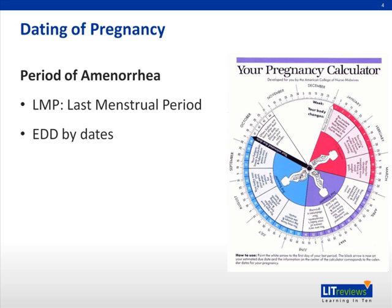If you align the last period arrow with the date that she gives you, the expected date of delivery arrow would point to her expected date of delivery. Nowadays it's even easier — we have computer software that gives you the due date.